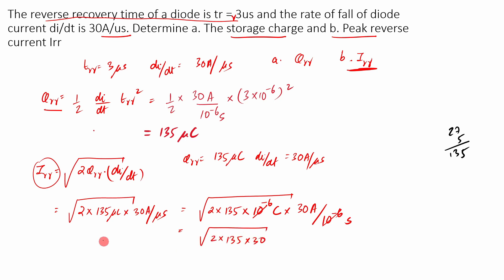So if you find out this equation, you will find that IRR is equal to 90 amperes. You can see that the reverse recovery current in this numerical, you can find that that is 90 amperes, it is quite a high value.